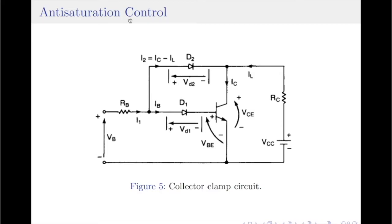In high voltage BJTs, the amount of storage time is a function of minority carrier concentration in the base region just before the turn-off, and fall time is a function of base drive current turn-off characteristic. The storage time can be decreased by minimizing the concentration of minority charge carriers in the base region. This can be accomplished by operating the transistor in soft saturation or quasi-saturation rather than hard saturation.